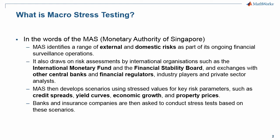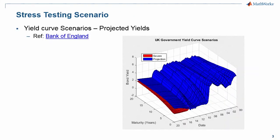As an example of a stress testing scenario, this is from the Bank of England and it concerns the yield curve. It shows historical values of the yield curve together with projected future values of yields.